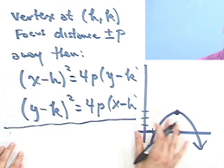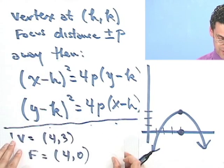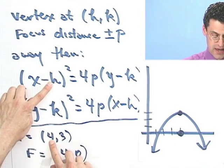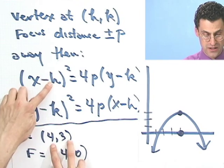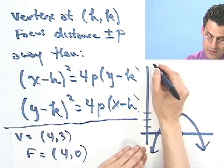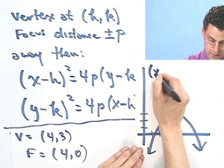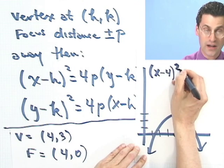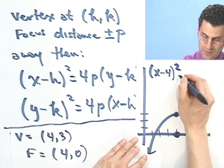What would we have? I would see that I'd have, oops, I guess I need this here, sorry. So here's the vertex. So what would I see? I would see x minus h. Now the h here is 4, and the k here is 3, because that's the vertex. So I'd see (x minus 4) squared equals,